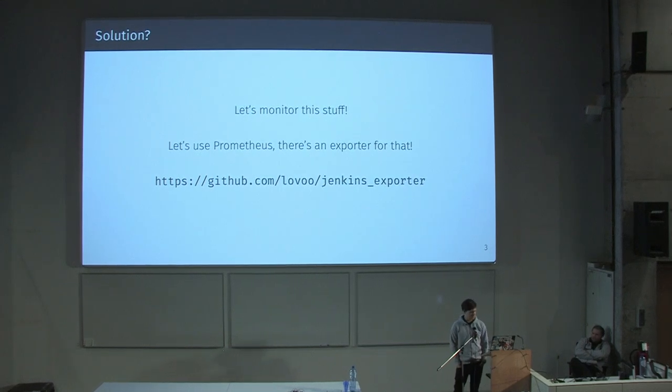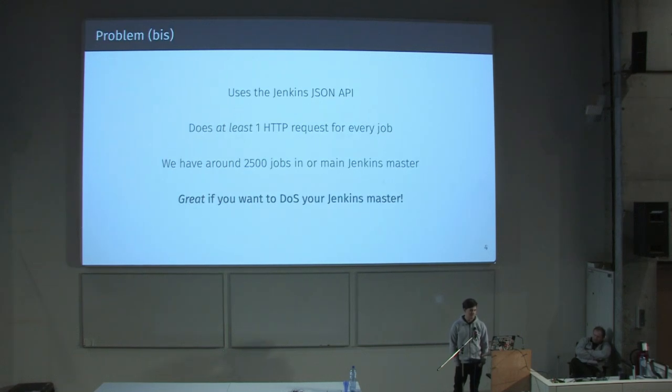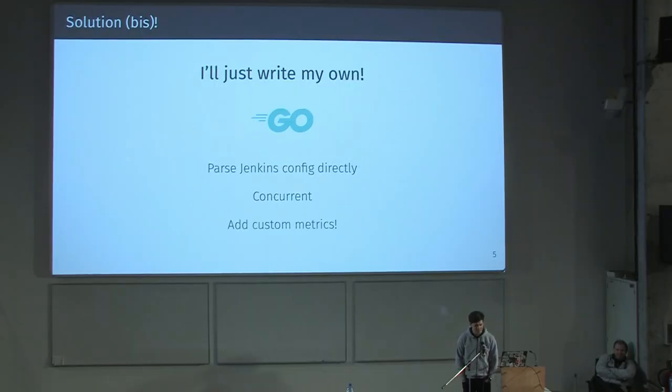I'm pretty into Prometheus and I knew about an exporter for that — it's on GitHub, written in Python — but I started playing with it and it had some issues. Mainly, it uses the Jenkins HTTP API and does at least one HTTP request to Jenkins for every job. As we have around 2,500 jobs in our main Jenkins master, that's really great if you want to hammer a Jenkins master every 15 seconds or so. So I decided to write my own, parse the Jenkins XML config directly and concurrently, add some custom metrics — should be much faster.